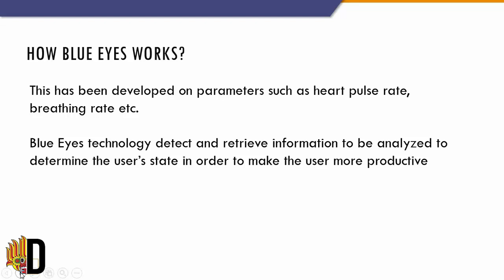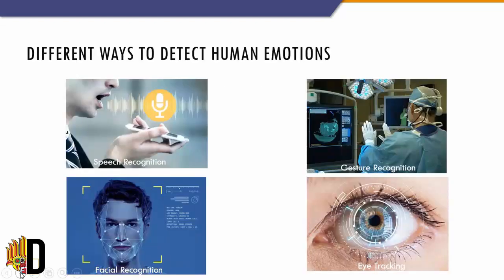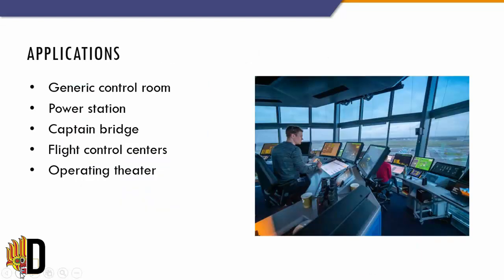Here are some ways to detect human emotions: speech recognition, gesture recognition, facial recognition, and eye tracking. Now moving into the applications of Blue Eyes Technology, we can divide them mainly into five categories: security, education, health and medicine, military, and home.